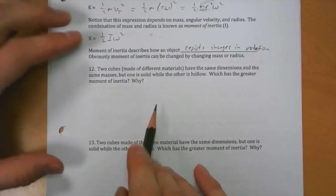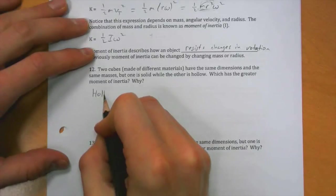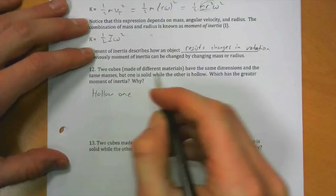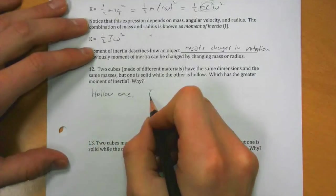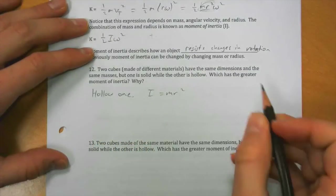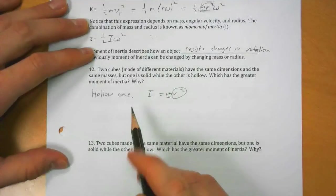So which has the greater moment of inertia? Well, it's going to be the hollow one. The moment of inertia is mr squared, so the mass is the same, so what's important is the radius.